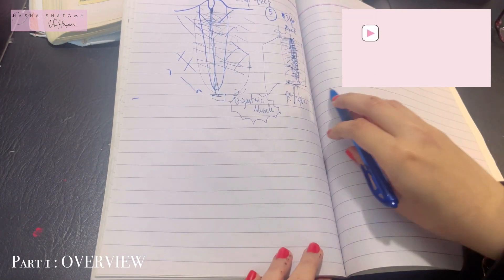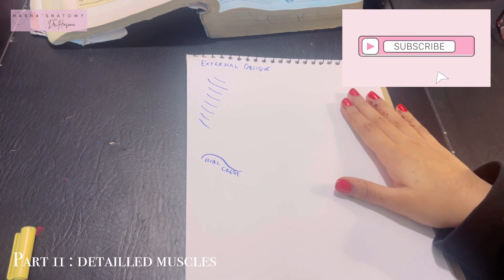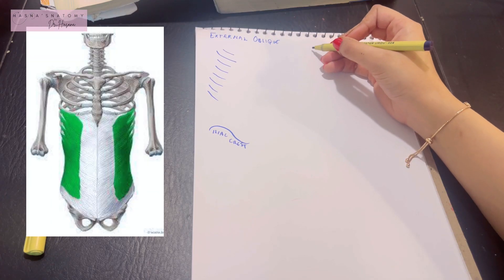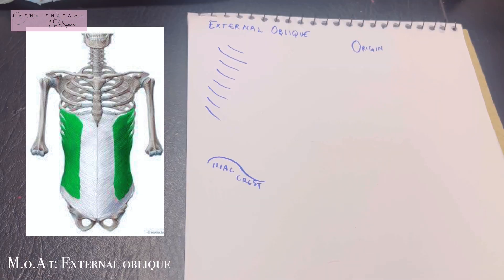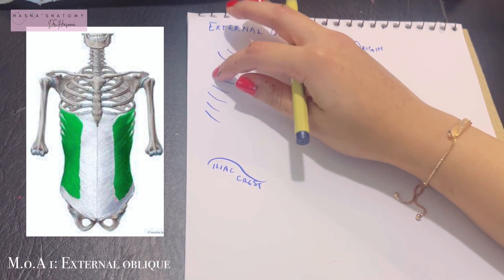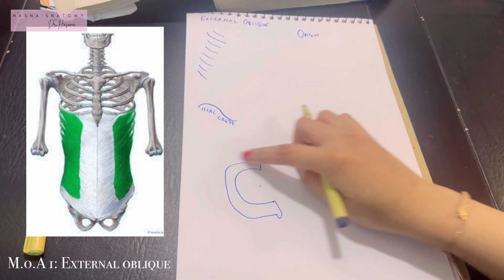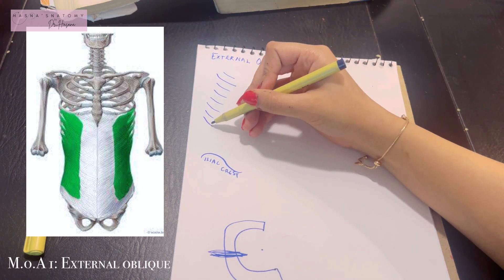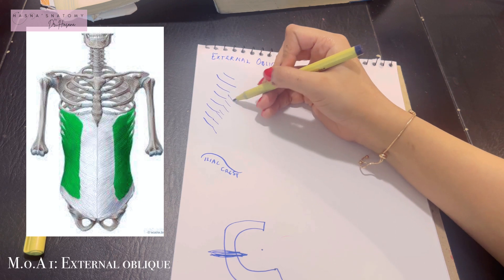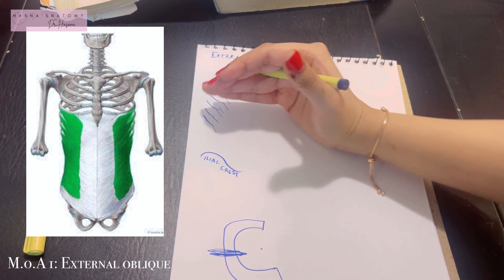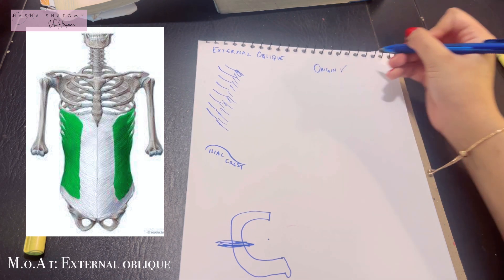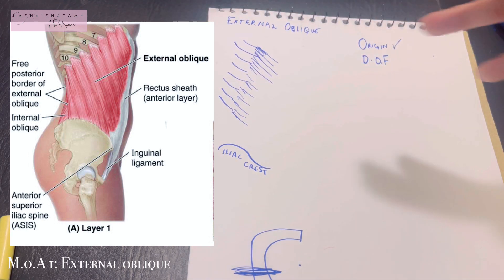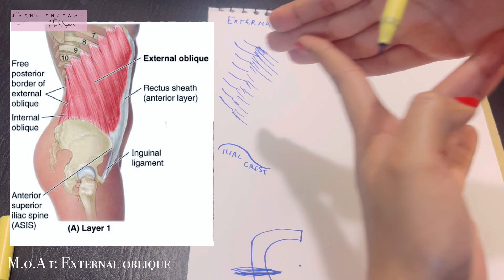Let's talk about the first muscle, the external oblique. Its origin is from the lower eight ribs — specifically the middle of the shaft of these ribs. The fibers run downwards, forwards, and medially, as though you are putting your hand in a pocket.